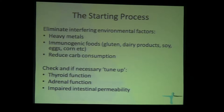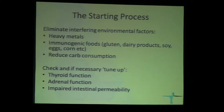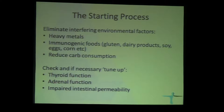Before we even start the process, we typically offer patients some preliminary things, which include heavy metal testing because heavy metals can interfere with the efficacy of antibiotics and antimicrobial therapy. We strongly recommend eliminating immunogenic foods — typically gluten, dairy products, soy, eggs, corn, etc. — and reducing carbohydrate consumption to minimize the risk of fungal infections. In our practice, we also check thyroid function, renal function, and intestinal permeability to tune up all these things before we start the protocol.